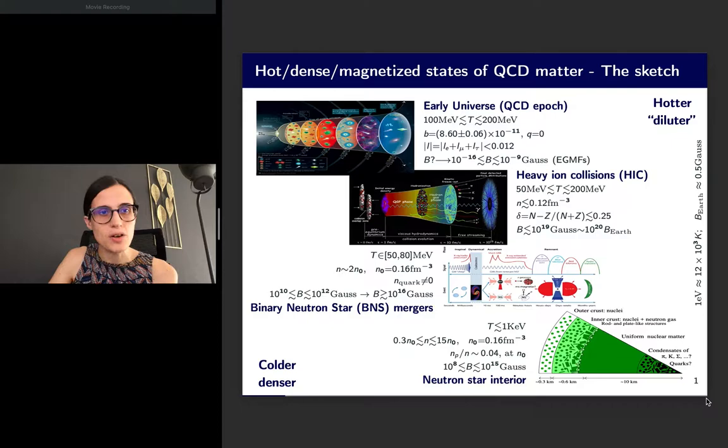First, let's discuss where we can find in nature hot, dense, and even magnetized states of strongly interacting matter. We are particularly interested in those states which lie at the edge between the hadronic phase, where quarks and gluons are confined within hadrons, and the quark-gluon plasma phase. One possibility is to observe the first few microseconds of our universe's evolution, when the universe was hot, rather dilute, and strongly magnetized—a primordial cosmic soup.